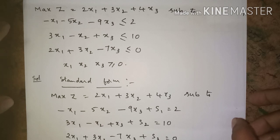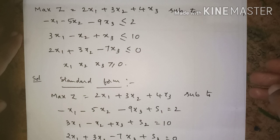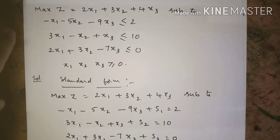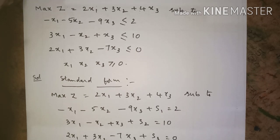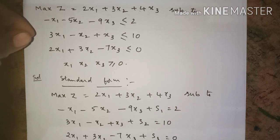Hello everyone, we will do one more problem in the simplex method. Maximization of Z is equal to 2x1 plus 3x2 plus 4x3, subject to three constraints.